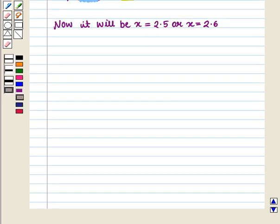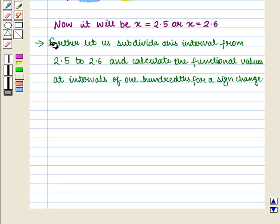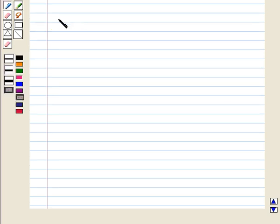Now, we want to find the zero to the nearest tenth and we cannot necessarily go by which functional value is closer to zero. Further, let us subdivide this interval from 2.5 to 2.6 and calculate the functional values at intervals of one hundredth for a sign change.